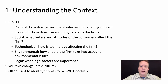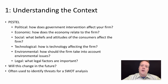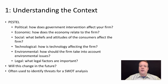The idea here is that there are six major components that you need to consider when thinking about the context of the firm in the overall environment it operates in. Political: how does government intervention affect the firm? Are there laws or regulations that affect the operations the firm can make? Economic: how does the economy relate to the firm?